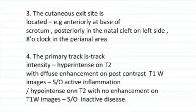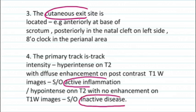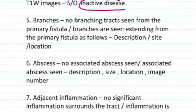Next is the cutaneous exit site — the external opening — described by location, for example, anteriorly at the base of the scrotum, posteriorly in the natal cleft, or at the 8 o'clock position in the perianal area. Then describe the activity of the track: whether it shows active inflammation — hyperintense on T2 with diffuse enhancement — or inactive disease, which is hypointense on T2 with no enhancement on post-contrast images.